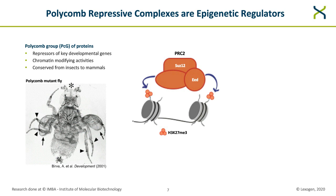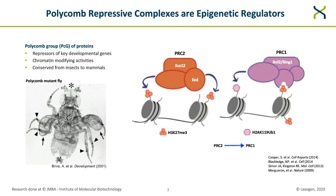PRC2 catalyzes the trimethylation of histone H3 on lysine 27, H3K27 trimethylation, whereas PRC1 deposits a ubiquitin residue on lysine 119 on histone H2A, referred to as H2A ubiquitination. It is known that PRC1 binds to PRC2-deposited H3K27 trimethylation, thus PRC1 depends to some extent on PRC2 for finding its target genes. Polycomb proteins are also thought to be involved in chromatin compaction and long-range chromatin interaction, though exactly how they achieve silencing is currently unclear.